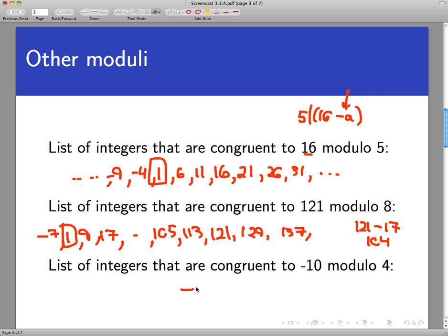So let's start with negative 10. That is congruent to itself, mod 4. And this time we'll have to go up. The next number up the list that's congruent to negative 10, mod 4 would be the number negative 6. The next one up the list would be negative 2.